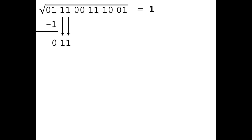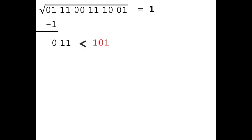What we need to do now is take the digits we have extracted so far and append the digits 0 and 1 to them. This forms the number 101. Next, we are going to compare the remainder 011 against the number we just constructed, 101. If the remainder is larger than or equal to the number, then the next digit will be a 1. If the remainder is less than the number, then the next digit will be 0. In our case, the remainder is less than the number, therefore the next digit will be a 0.